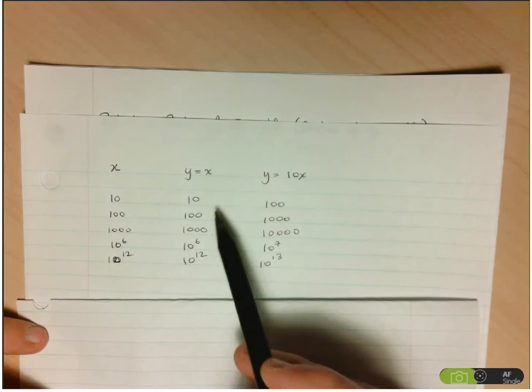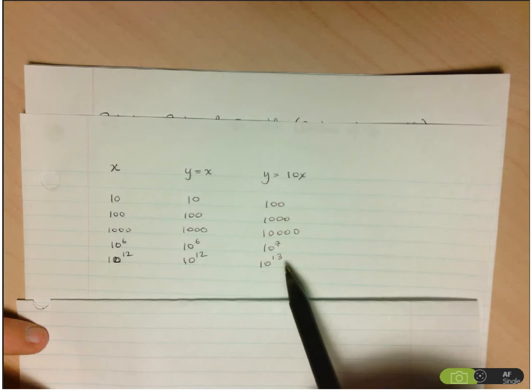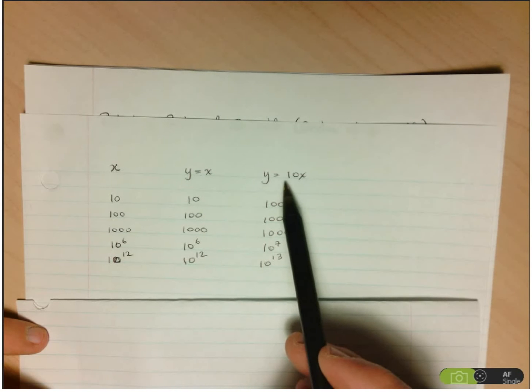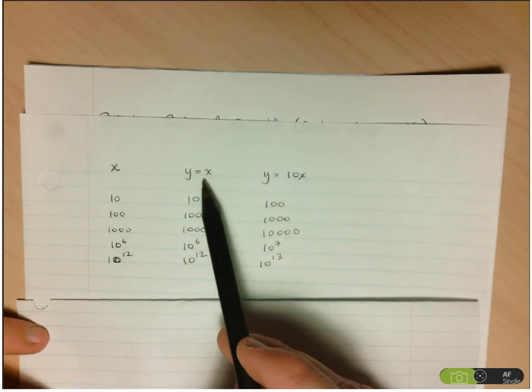We see here that if we look at both tables and if you think about the lines, the graphs of each of these lines, y equals 10x grows more quickly than y equals x.